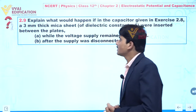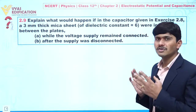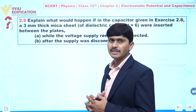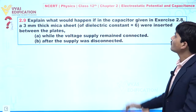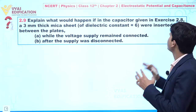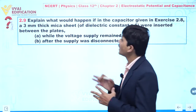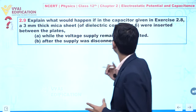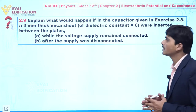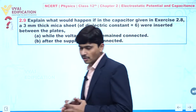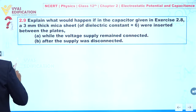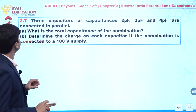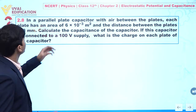We are going to discuss question number 2.9. In this question, it is given to you: explain what would happen if the capacitor given in exercise 2.8, or a 3 mm thick mica sheet of dielectric constant 6, were inserted between the plates. So now, we will take values from the previous question.